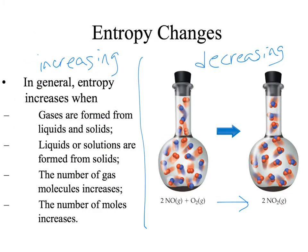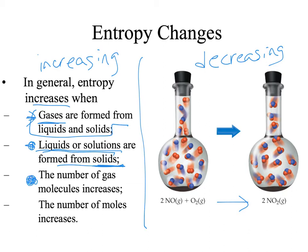In general, entropy increases when gases are formed from liquids and solids, because the molecules in the gases can move around more — so there are more microstates in a gas. Entropy also increases when liquids or solutions are formed from solids, because molecules or ions are locked into place in a solid, but in a liquid or solution they can move around more, giving more microstates. If you increase the number of gas molecules in a reaction, or the number of moles, the entropy increases.